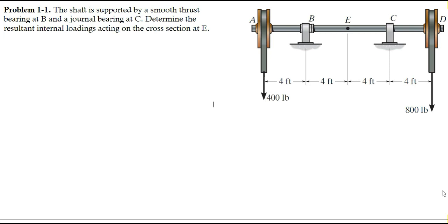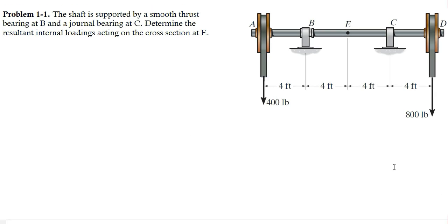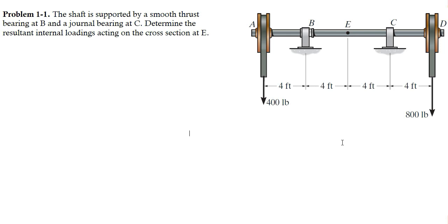Hello everyone. In this video we are going to solve problem number one from the chapter of Stress in the book Mechanics of Materials by RC Hibbeler. In this problem, a shaft is given which is supported at point B and point C. At point B there is a thrust bearing and at point C there is a general bearing. We are required to determine the resultant internal loadings acting on the cross-section at point E, which is exactly at the middle of the shaft.